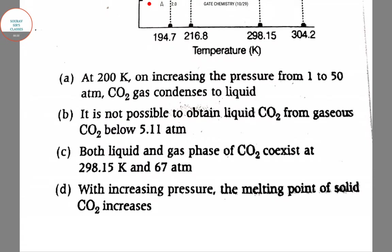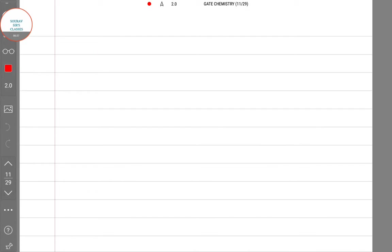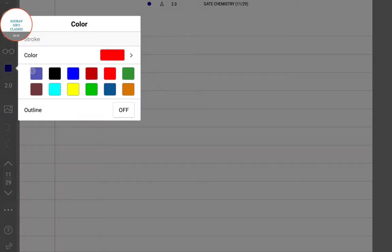So we have four options and we have to choose the incorrect option out of it. Now, before solving the question, let us draw the phase diagram of CO2.